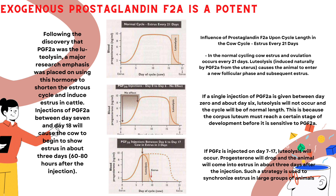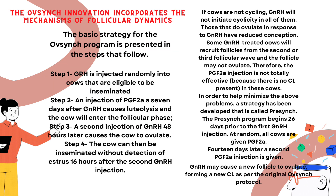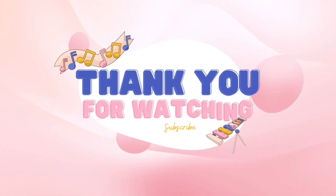Injections of PGF2α between day 7 and day 18 will cause the cow to begin to show estrous in about 3 days. The Ovsynch innovation incorporates the mechanisms of follicular dynamics. The basic strategy for the Ovsynch program is presented in the steps shown in the video.